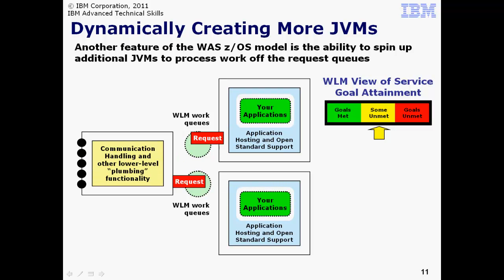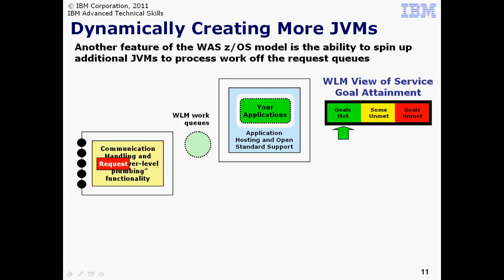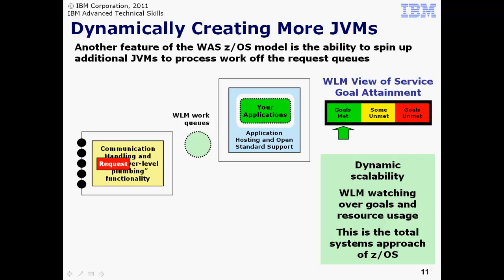Before we go on, we feel it's important to make two points. First, this behavior is controlled by you. By default, only one Servant will be started. You configure the ability to start multiple. You configure the minimum and maximum. Second, there's more sophistication than we're showing you at this point. The upcoming 401 series will go into a lot more detail on the inner workings of this system. The work slows down, and ZWM now sees the goals as being entirely met. At this point, the second Servant region is deemed as unnecessary, so ZWM shuts down the second Servant region. No work is lost. The work is allowed to complete before the Servant comes down.